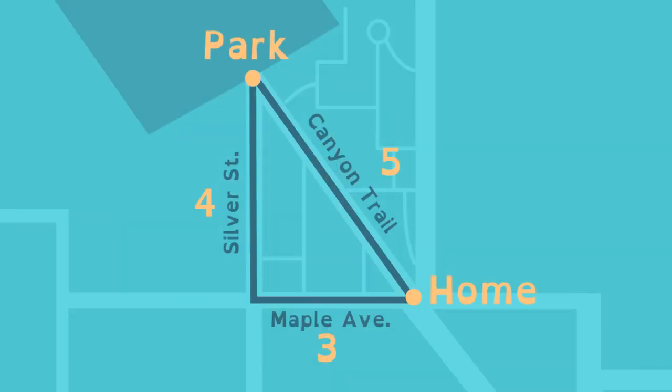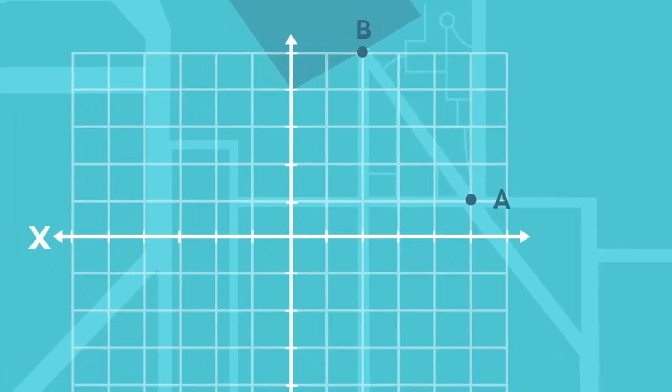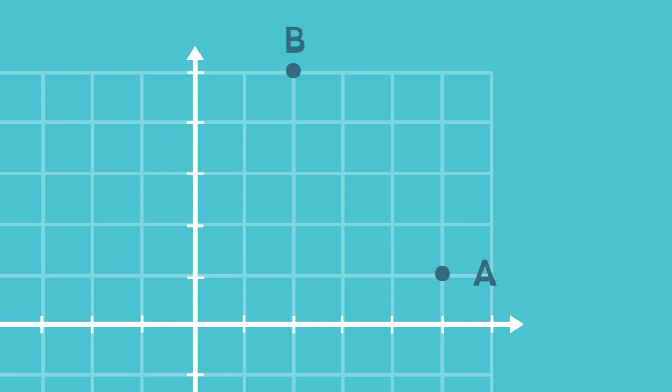What if Lucy doesn't know the lengths of Maple Avenue and Silver Street? A coordinate plane can help. Lucy's house and the park can be points on the plane, one at (5,1) and the other at (2,5).